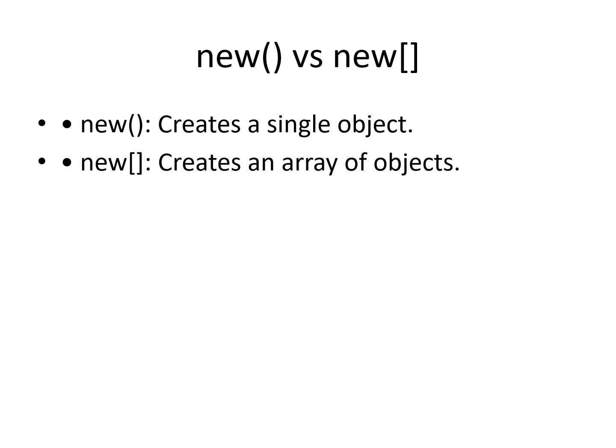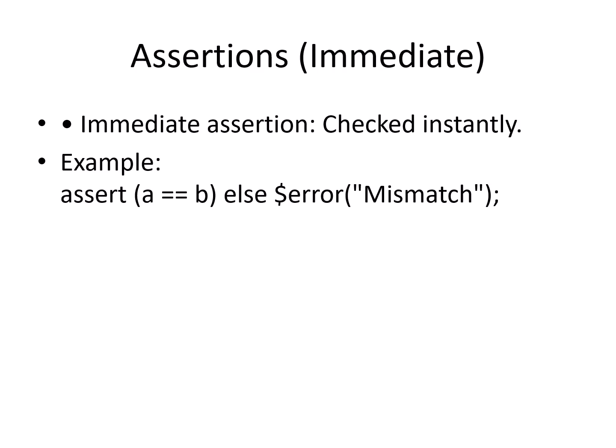Another question was the difference between new and new[]. new is used for a single object, while new[] is used when you want to create an array of objects. For example, creating 200 packet objects can be done with new[200], instead of writing new 200 times.